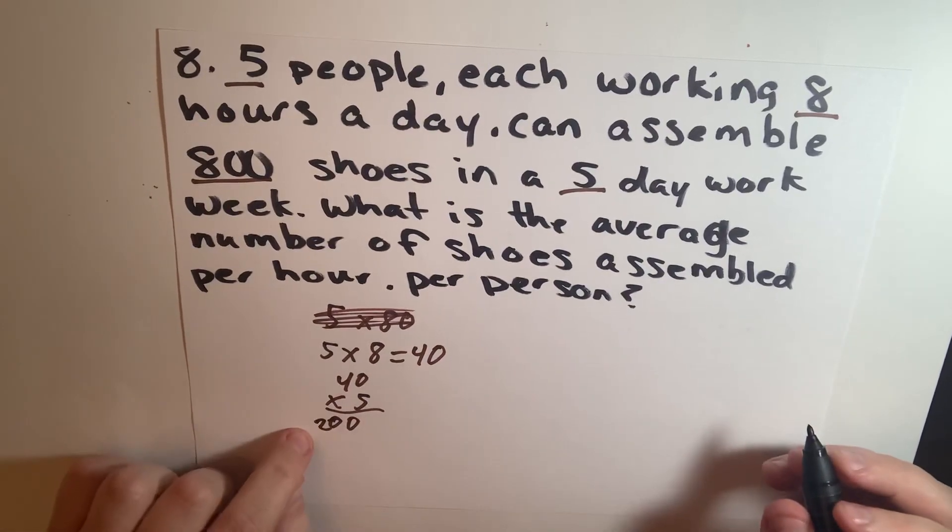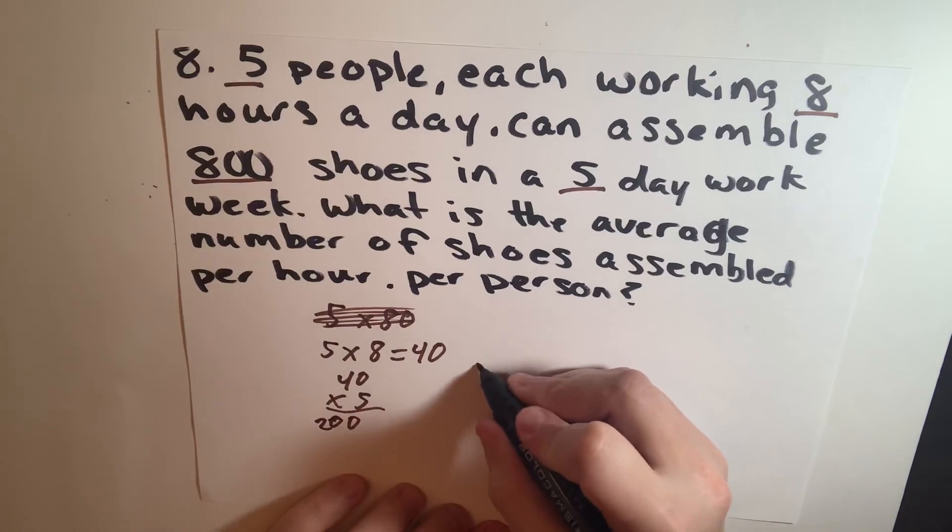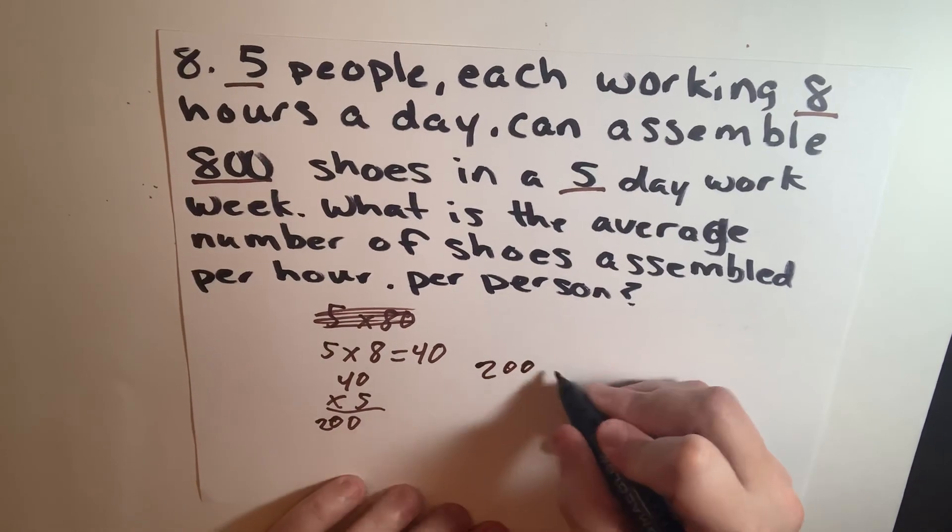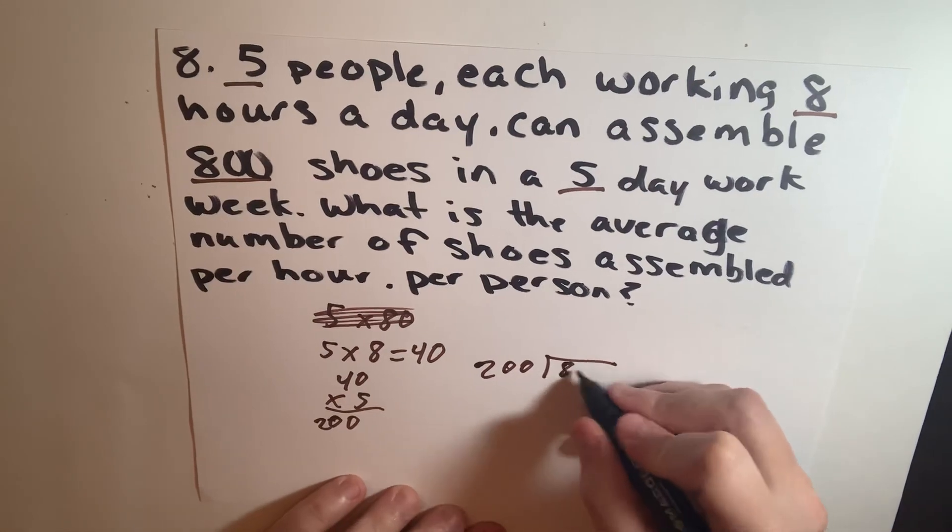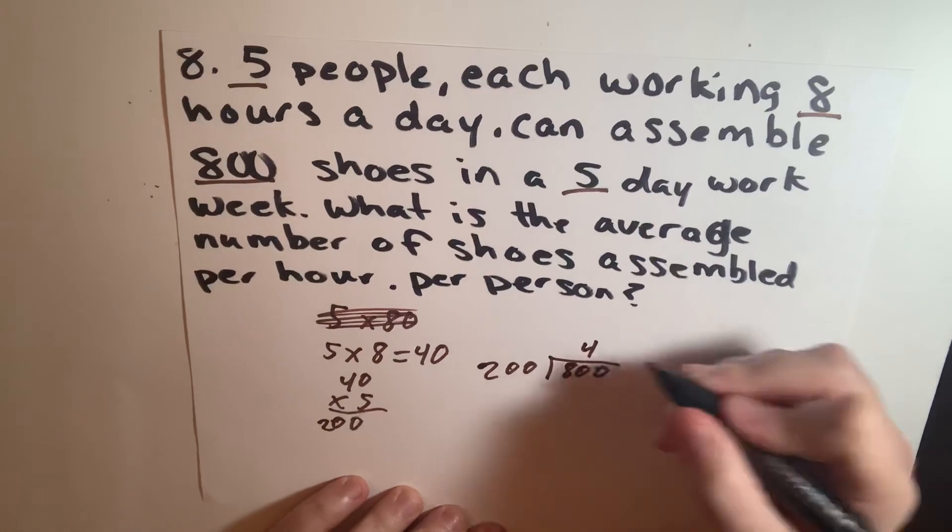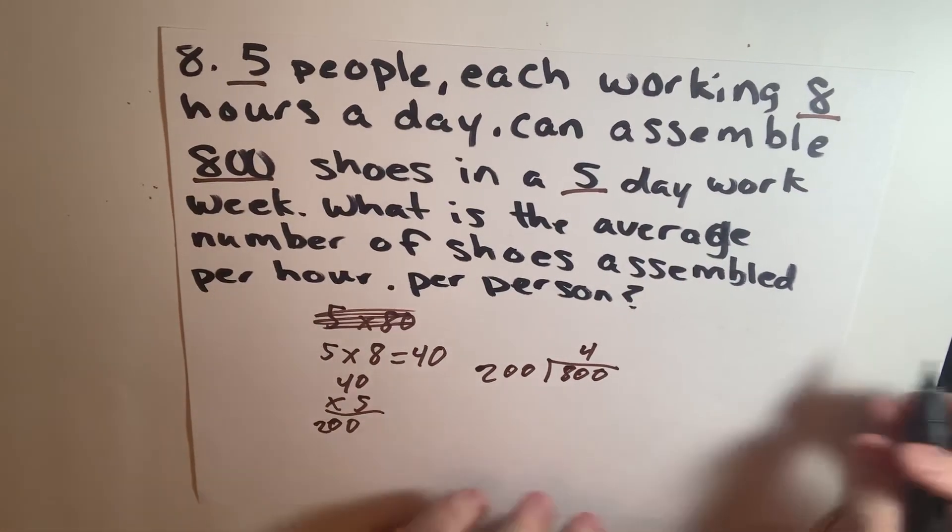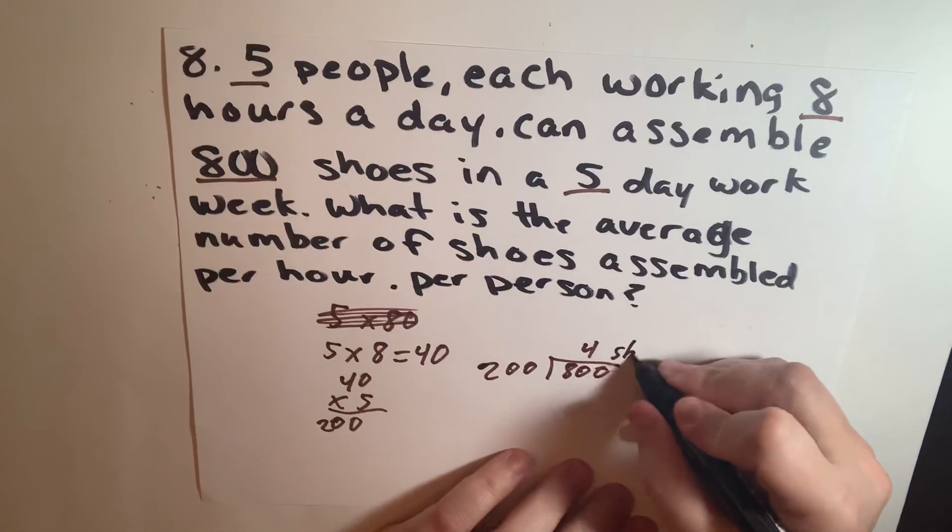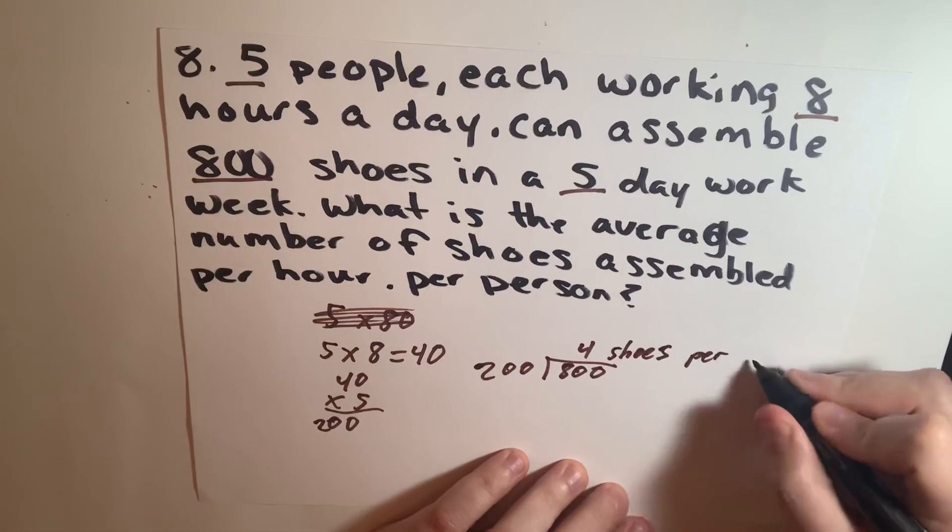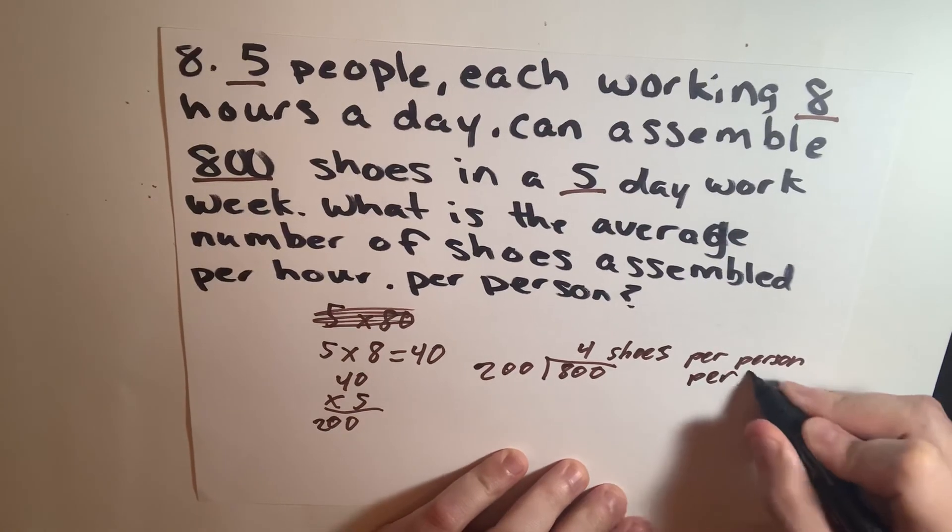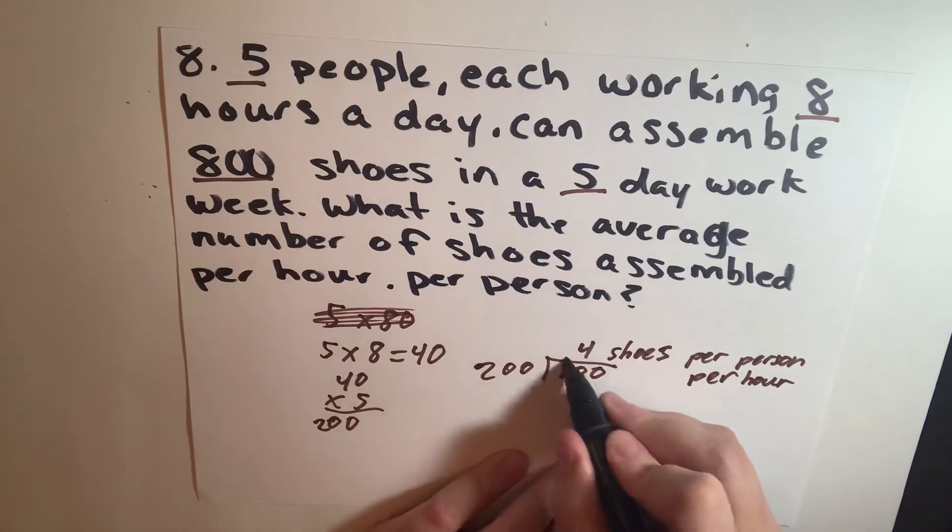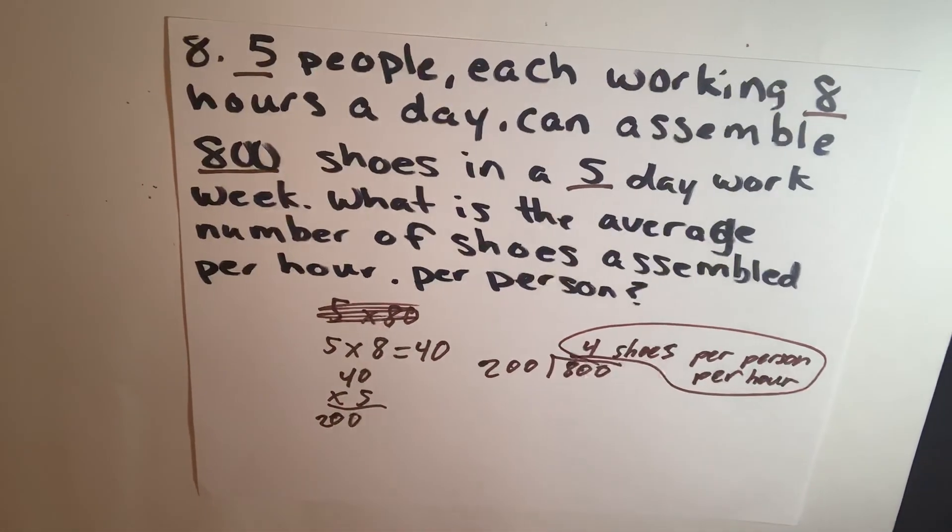Now we have 200 and we're going to divide that by our original big number, 800. This equals 4. So that means your answer is going to be 4 shoes per person per hour.